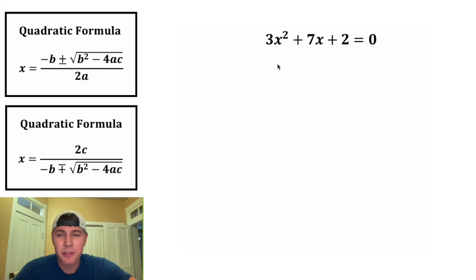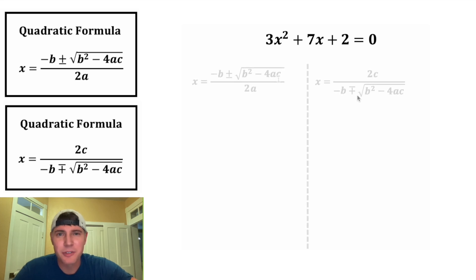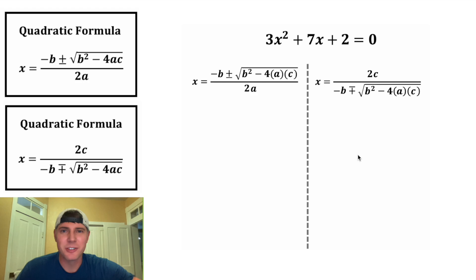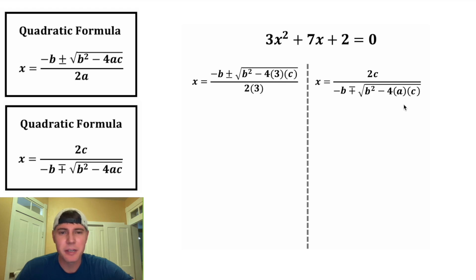Let's try out 3x squared plus 7x plus 2 equals zero. The leading coefficient is 3, which means a is equal to 3, so this a will become 3 in each place.